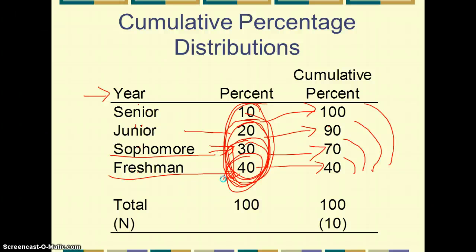Percentage distributions — whether straightforward univariate frequencies or cumulative percentage distributions — are pretty standard ways of representing and describing data. They give us a very basic but helpful overview of what the distribution of people in high school looks like.